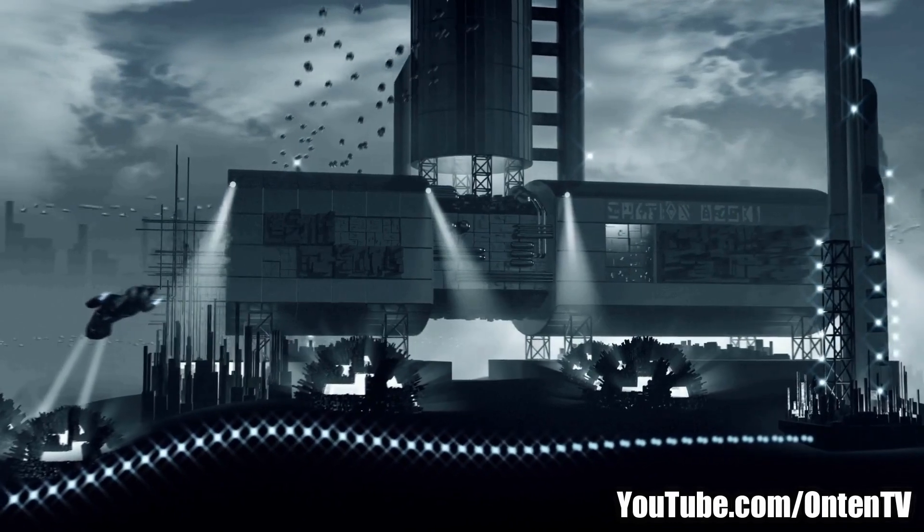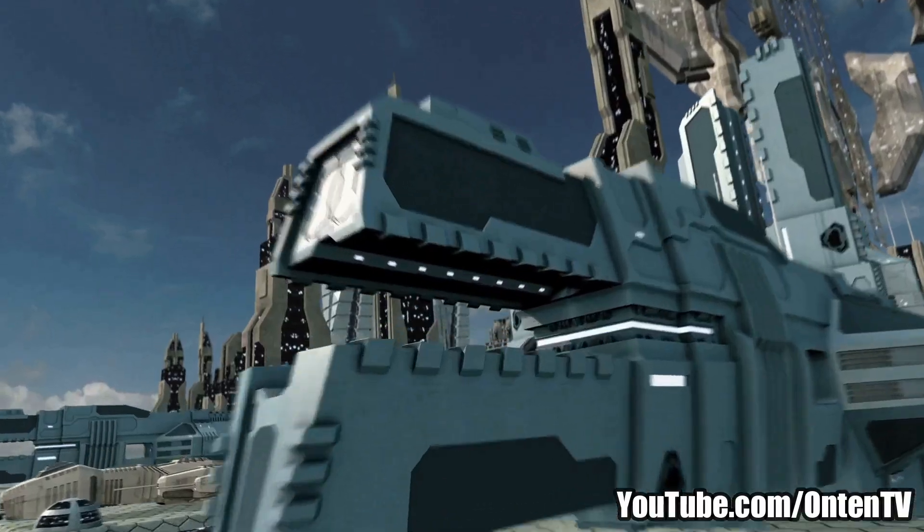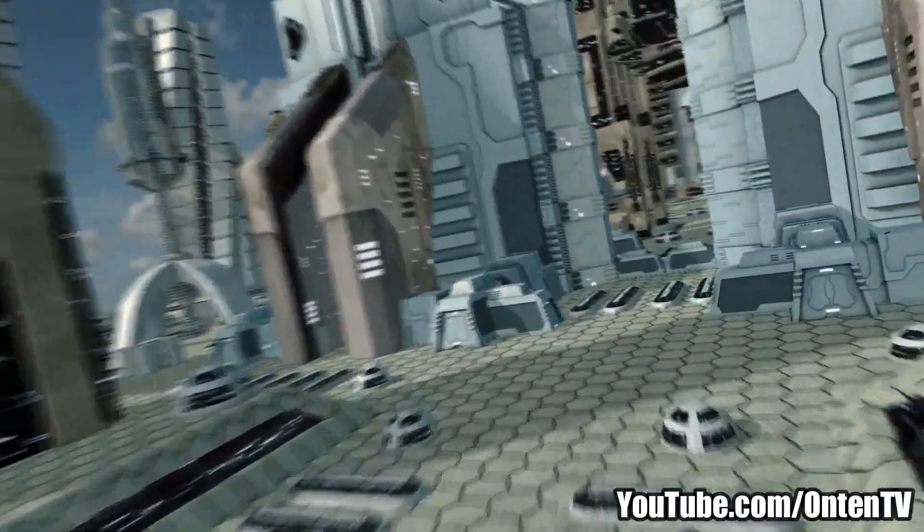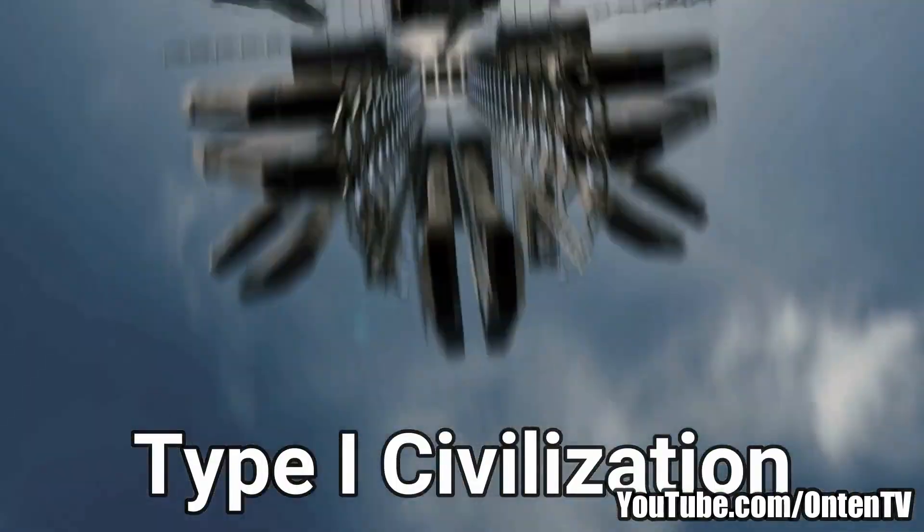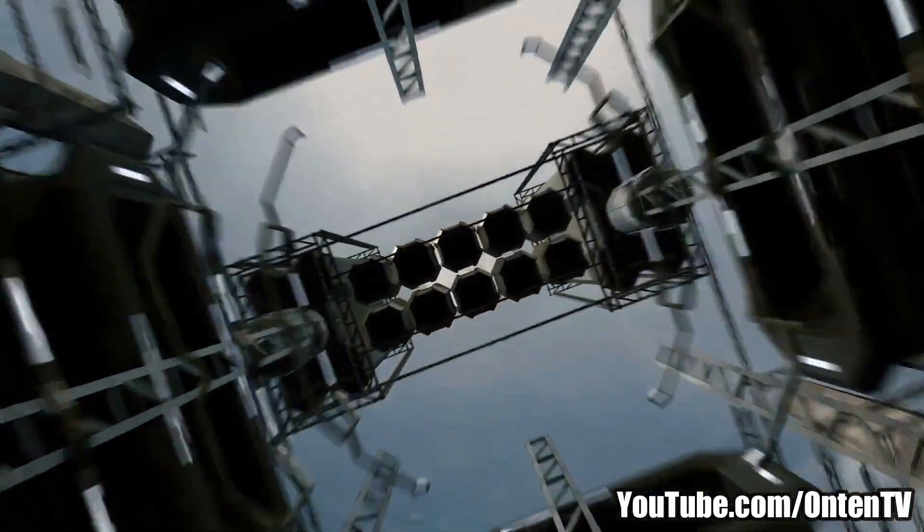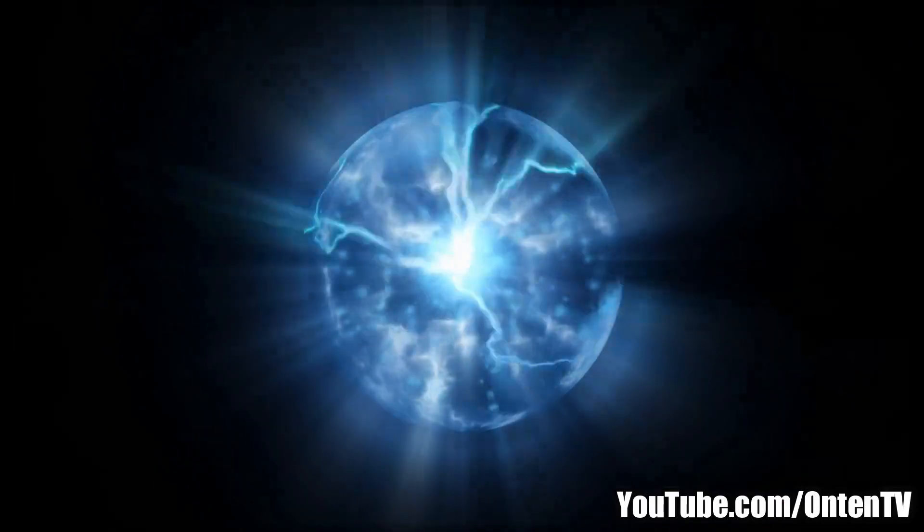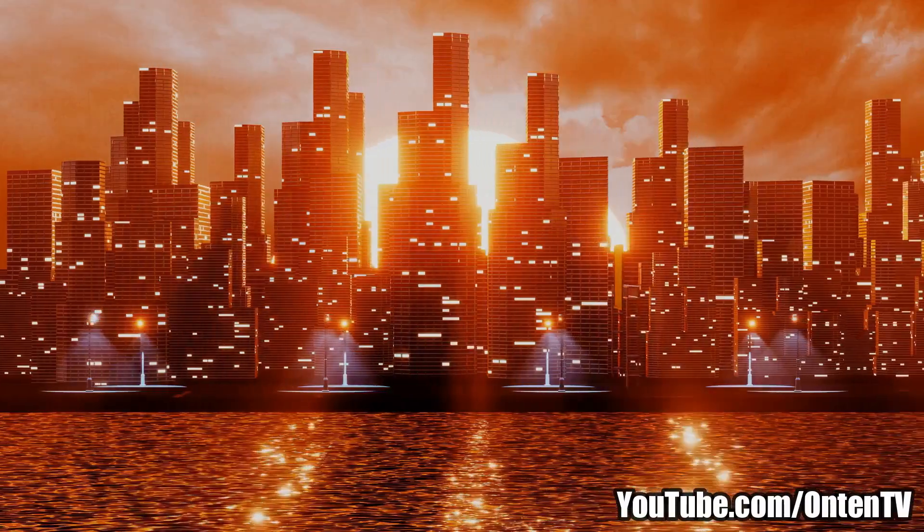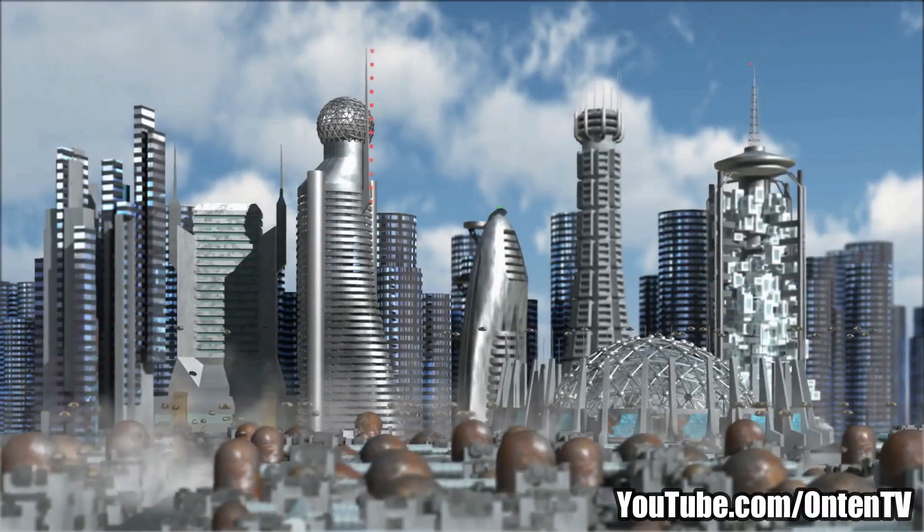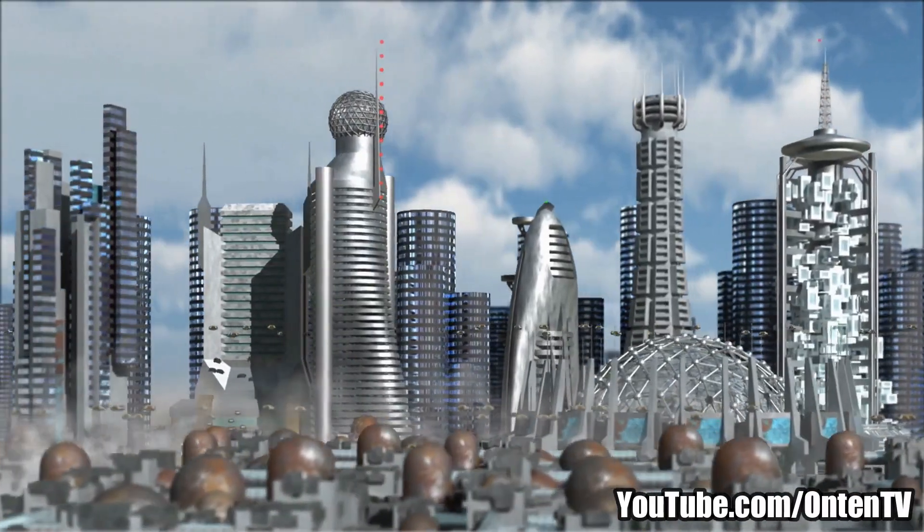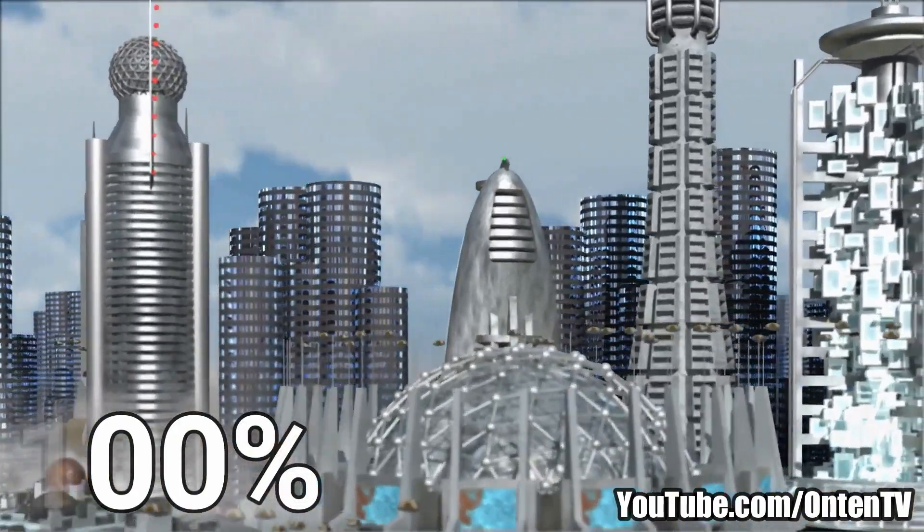What would a civilization like this look like? You can divide these civilizations into three categories. A type 1 civilization is so advanced that it can use 100% of the energy it has in its planet. Us humans are 73% there, and they say around 200 years later we're going to be a type 1 civilization, so we can use 100% of the energy of planet Earth.